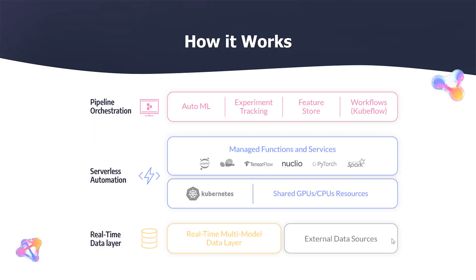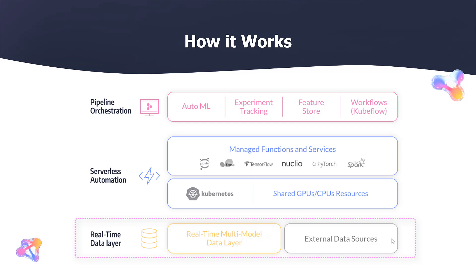So what is Iguazio? Iguazio is an end-to-end data science platform. It comprises of the following components. A robust data layer to store and analyze online and offline features. It supports various data types such as key-value, time series, streaming, or any file or objects such as Parquet files, for example.